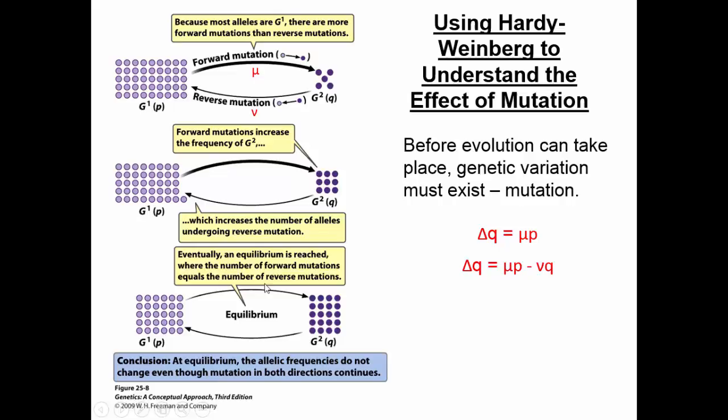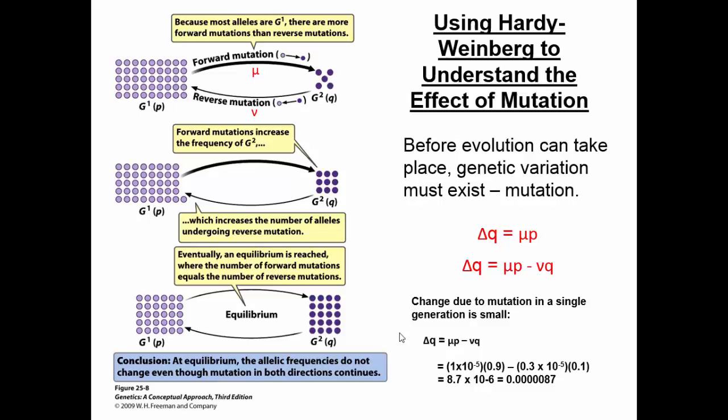With actual numbers from experimental data, the change in Q per generation from mutation is actually quite low. This shows that mutations are important for evolutionary change, but the amount a given mutation contributes to change in allele frequency per generation is very small. Environmental change contributes much more quickly to evolution than do mutations — something worth thinking about in terms of how quickly we're changing the modern environment.